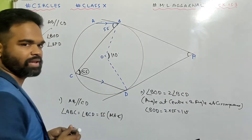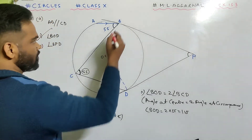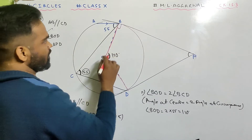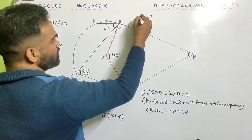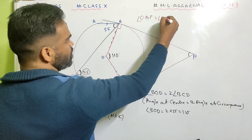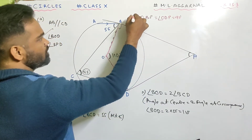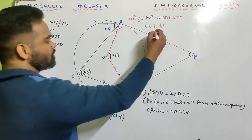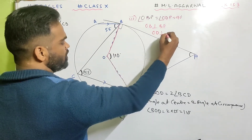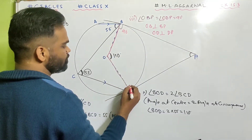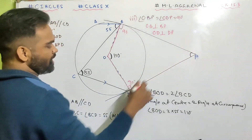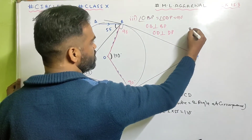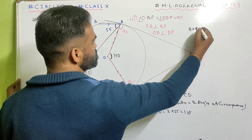Now for BPD. Angle OBP and angle ODP are both 90 degrees because OB is perpendicular to BP and OD is perpendicular to DP — the radius is perpendicular to the tangent. Quadrilateral BODP: 90 plus 110 plus 90 plus angle BPD equals 360. That gives 290 plus angle BPD equals 360.